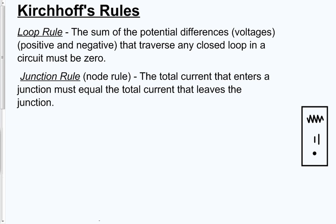The junction rule, also known as the node rule, says that the total current — and note that we're talking about current here, versus voltages above — the total current that enters a junction must be equal to the total current that leaves the junction.